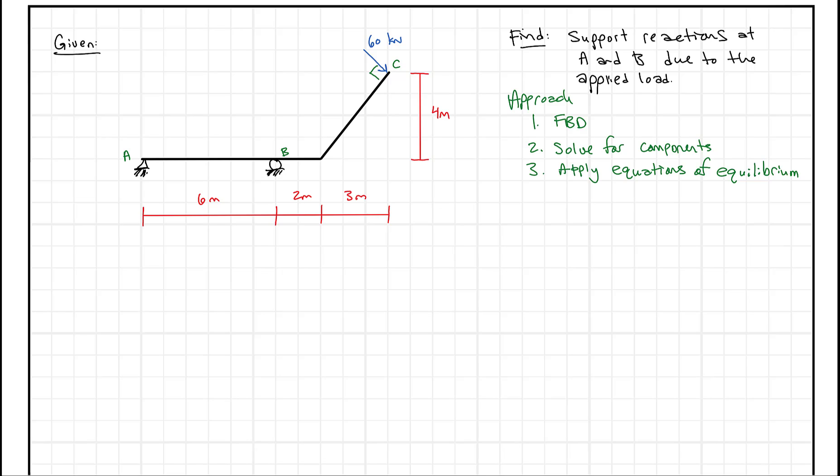Alright, so we're given a problem where we have to find the reactions at A and B. This problem is a little bit different in the series here where now we have a beam with just simple supports - A is a pin, B is a roller - but we have this force at an angle, and it's not just at an angle, it's also at a distance away from the x-axis, if you will.